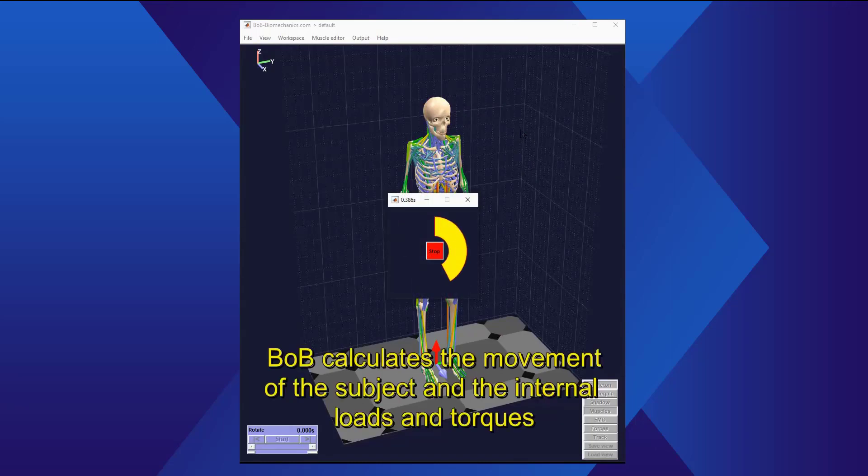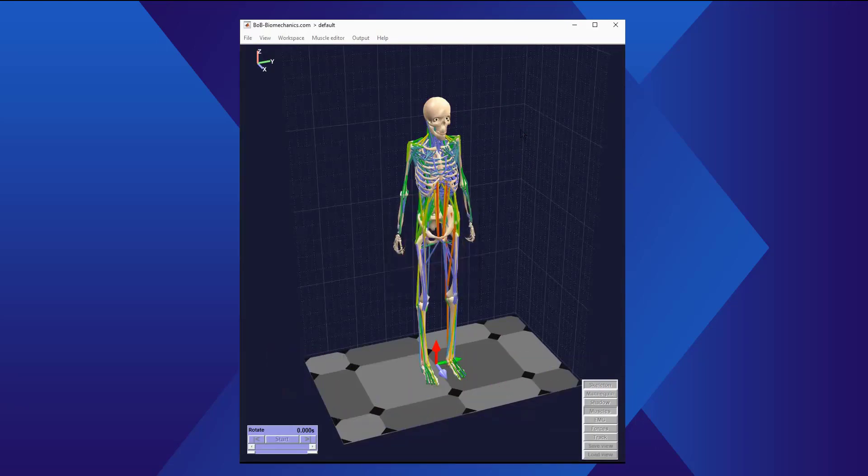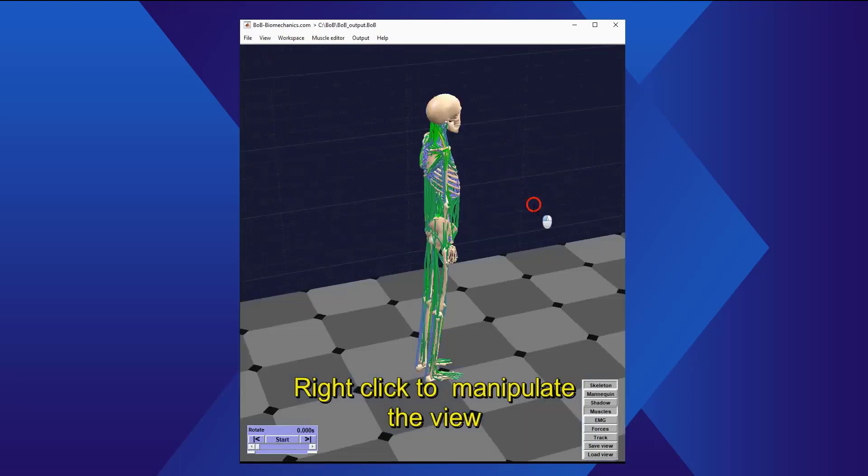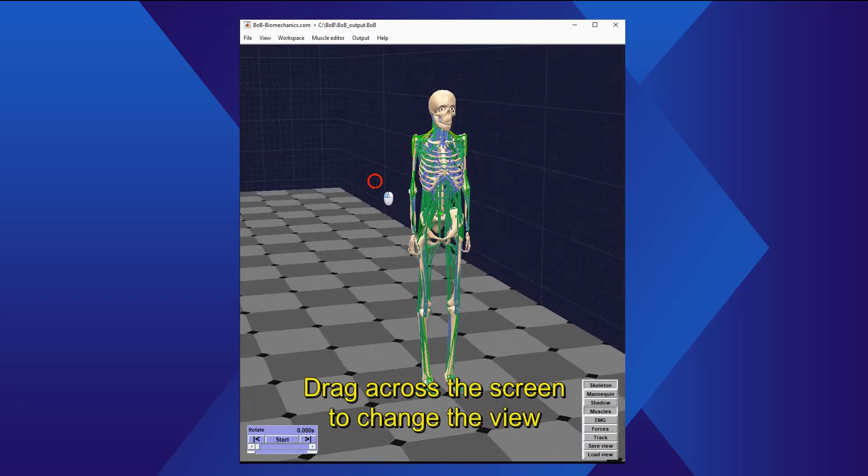Bobb calculates the movement of the subject and the internal loads and torques. Right-click to manipulate the view. Drag across the screen to change the view.